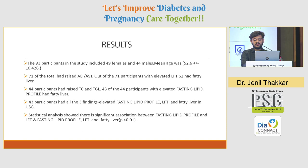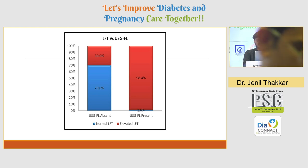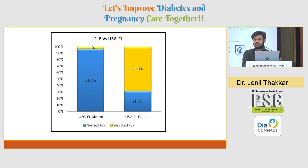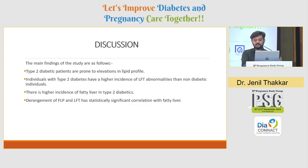Interestingly, 43 participants had all three findings: elevated fasting lipid profile, elevated LFT, and fatty liver on USG. Statistical analysis showed significant association between these three parameters. Of the participants with fatty liver on USG, 98.4% had elevated liver function tests, and 68.3% had elevated lipid profile. Also, 68.3% of all participants had all three findings: raised LFT, raised fasting lipid profile, and fatty liver on USG.